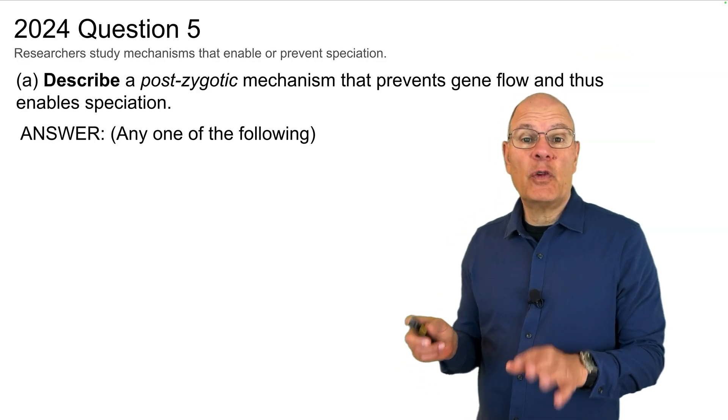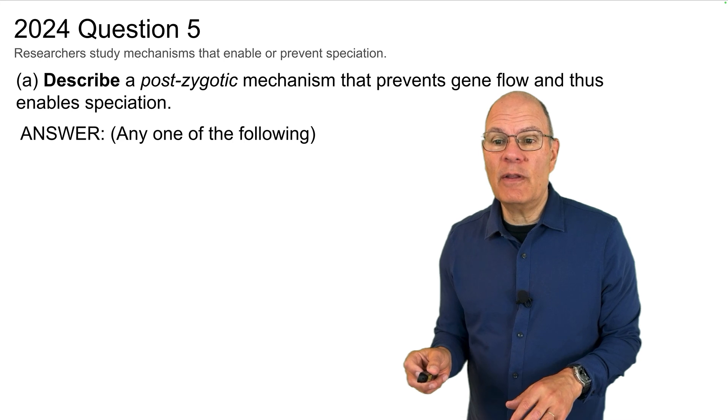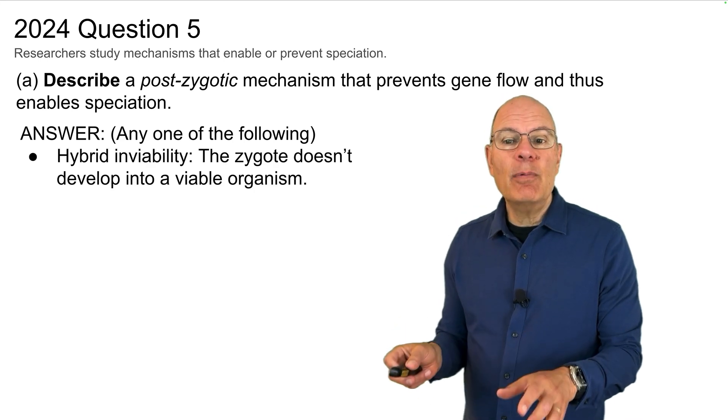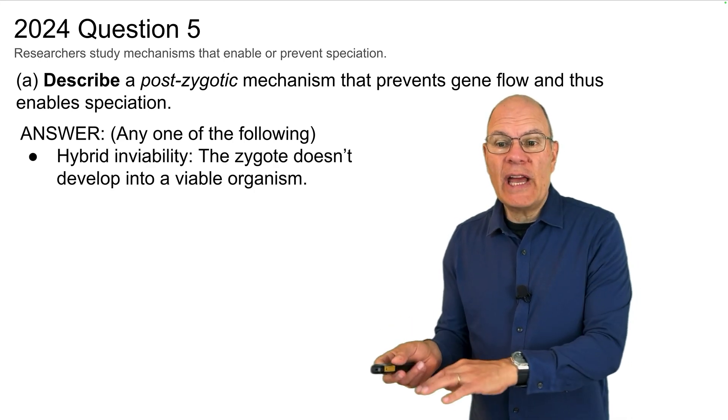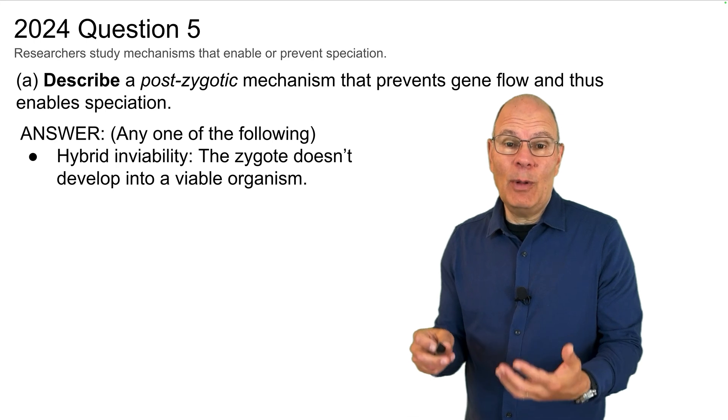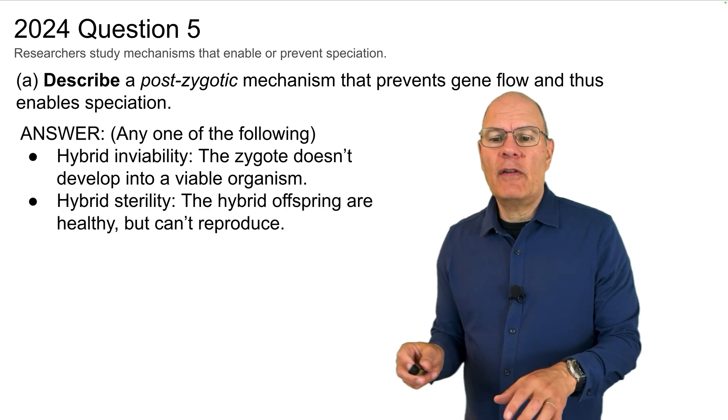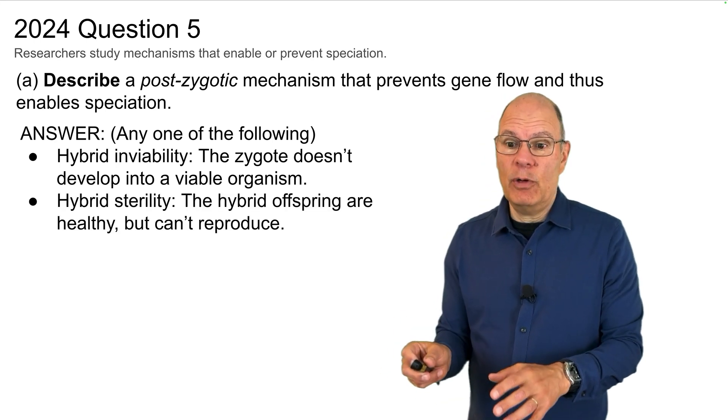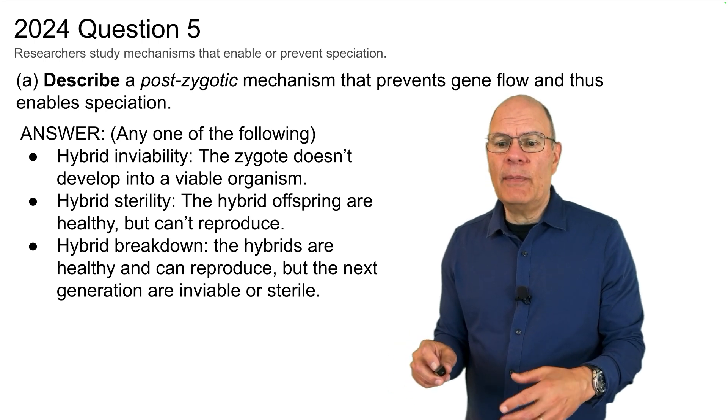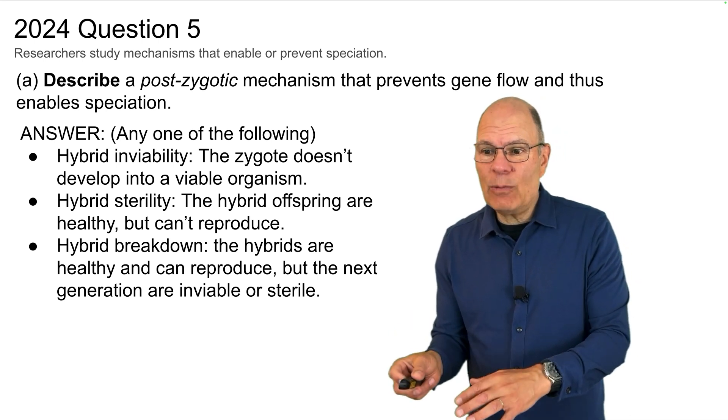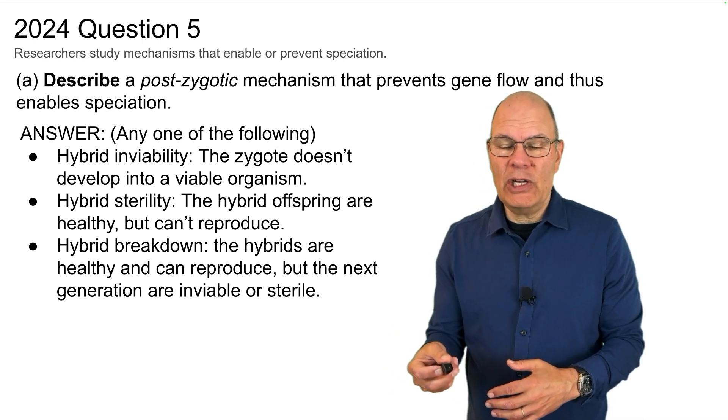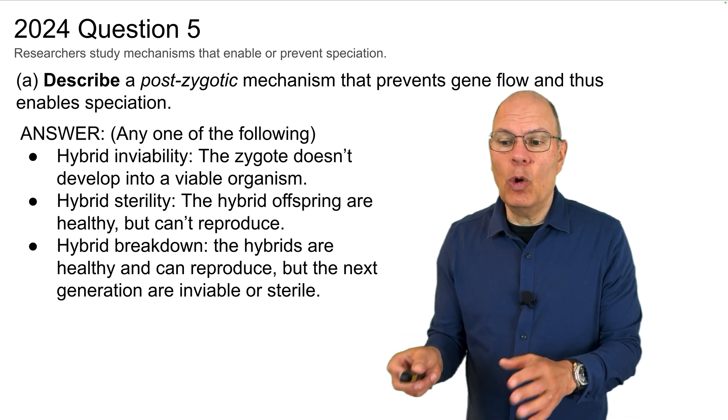Here's some possible answers for question 5A. You could have any one of the following. The first is hybrid inviability. The zygote doesn't develop into a viable organism. Hybrid sterility. The hybrid offspring are healthy, but they can't reproduce. And finally, hybrid breakdown. The hybrids are healthy and can reproduce, but the next generation is either inviable or sterile.